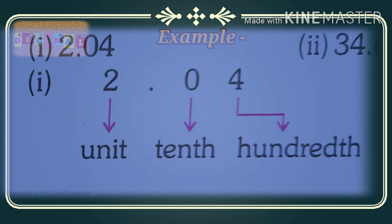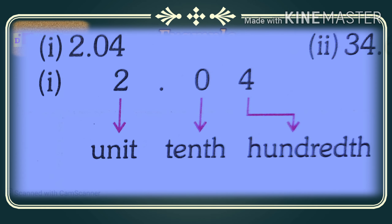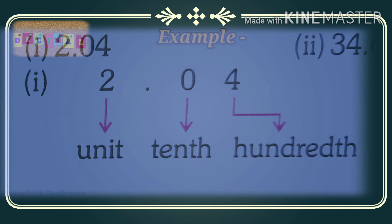For more clarification, see the example 2.04. Here we can say that 2 is at the ones or unit place, and after the decimal, 0 is at the tenths place and 4 is at the hundredths place.